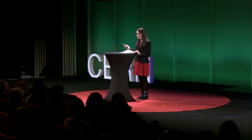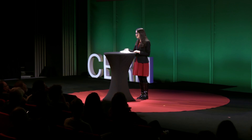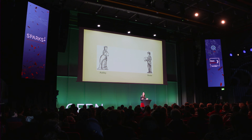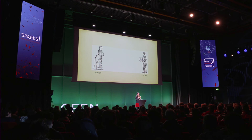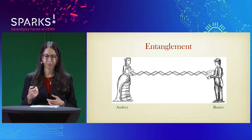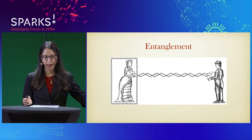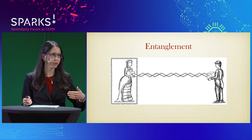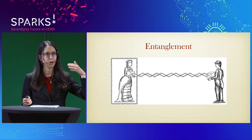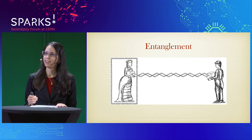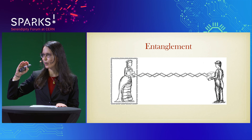Let's imagine that some young physicist, let's call her Audrey, has an electron. And her brother Baxter has another electron. The siblings can perform some operation on their particles that creates entanglement between them. Suppose that Audrey measures some property of her particle, and the measurement has two possible outcomes, which I'll call one and zero. For instance, Audrey can measure whether her particle has a lot of energy or a little energy.